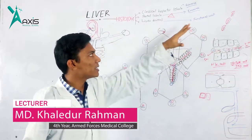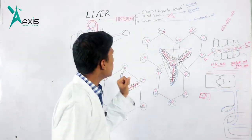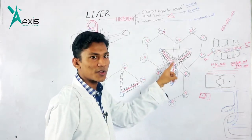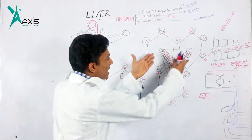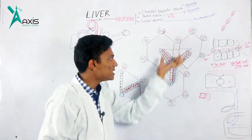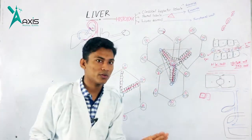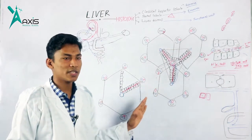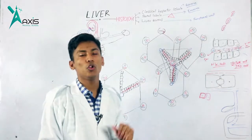The portal lobule is related to bile drainage. It is triangular in nature. It is centered on a portal triad and is adjacent to three classical hepatic lobules. This triangular structure, connecting the portal triad at the center to surrounding central veins, is what we call the portal lobule.